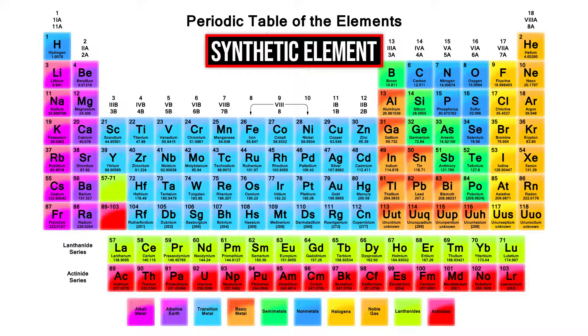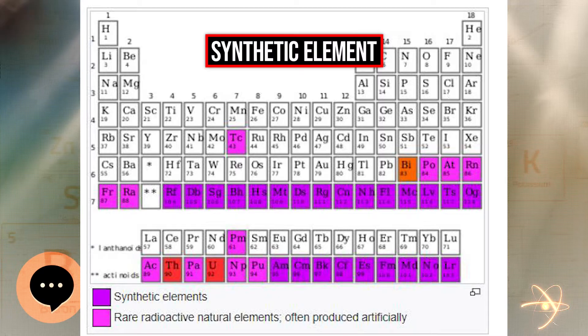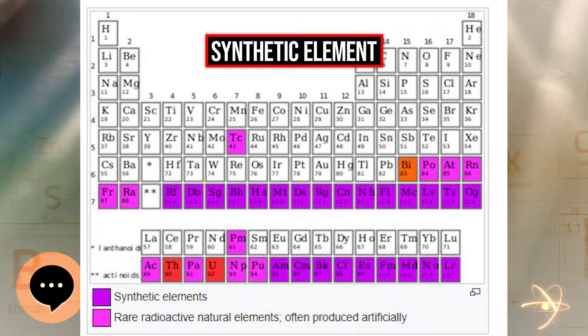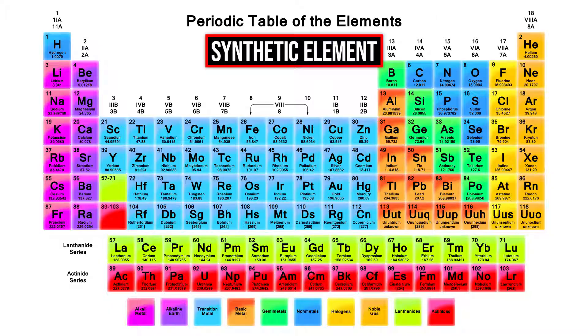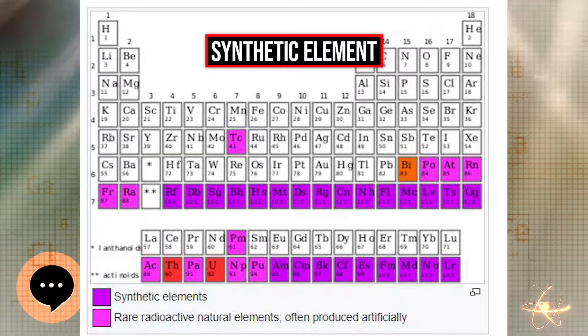Therefore, for synthetic elements, the total nucleon count of the most stable isotope, i.e., the isotope with the longest half-life, is listed in brackets as the atomic mass. The first element discovered through synthesis was technetium, its discovery being definitely confirmed in 1936.